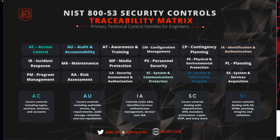The last group is the system and information integrity control family, which deals primarily with flaw remediation — things like patching. It also deals with antivirus protection, spam protection, and other types of integrity and validation controls. I think this is a good starting point for folks who want to dig into this further. I'm going to make a few more videos where I do deep dives into each of these control families and cover specific controls that might help you build out a more secure environment.